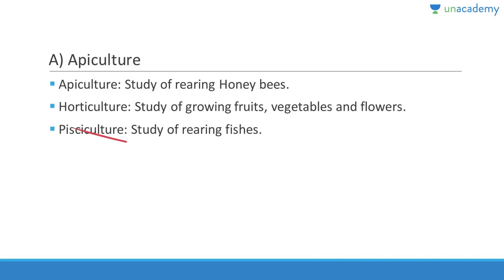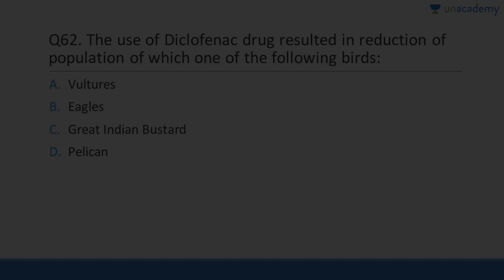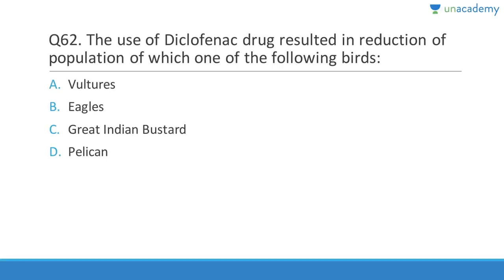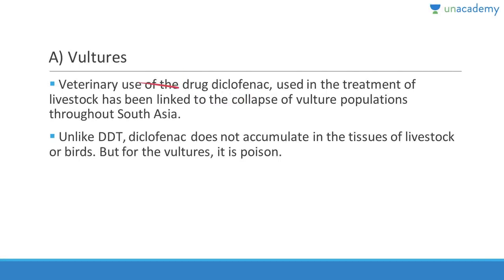Question 62: The use of diclofenac drug resulted in reduction of the population of which bird? Diclofenac is a common painkiller — vultures cannot process it, causing kidney failure. Answer is A, vultures. Use of diclofenac in treatment of livestock has been linked to the collapse of vulture populations throughout South Asia. Unlike DDT, diclofenac does not accumulate in the tissues of livestock or birds, but for vultures it is a poison.